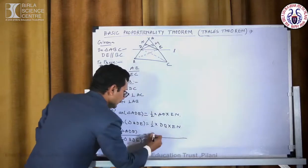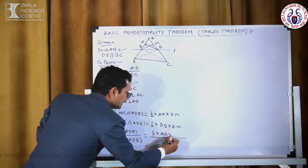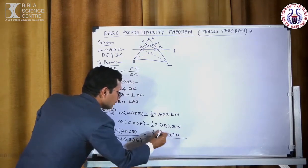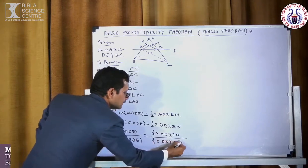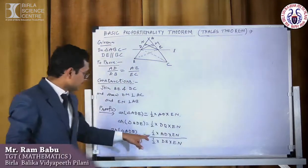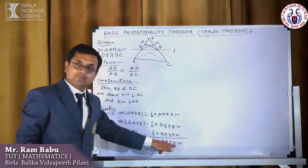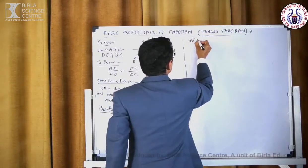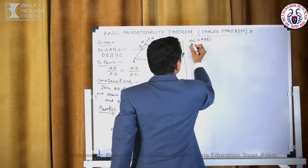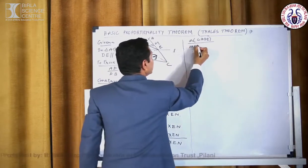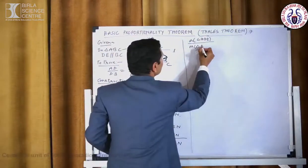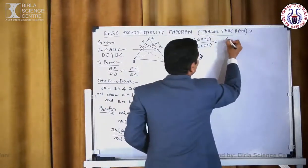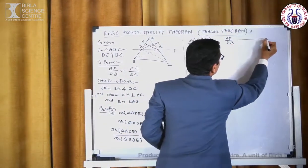The ratio of area of triangle ADE upon area of triangle BDE will be equal to AD upon DB. This is the first equation.